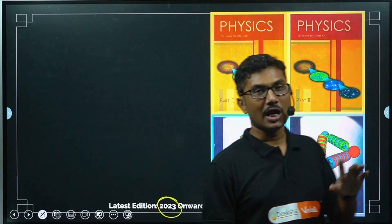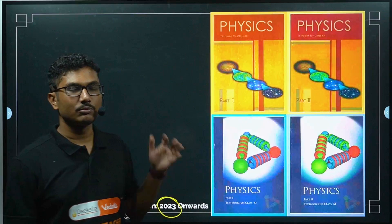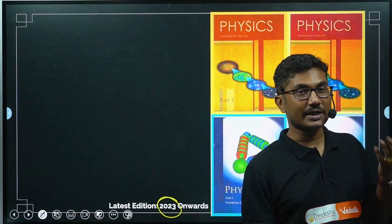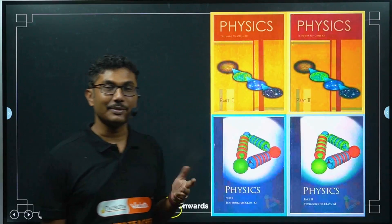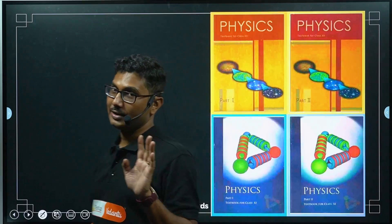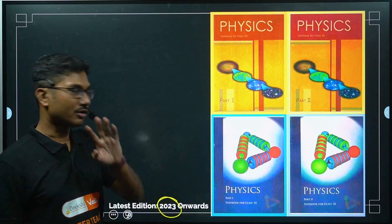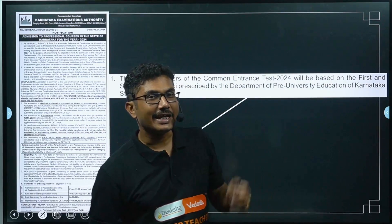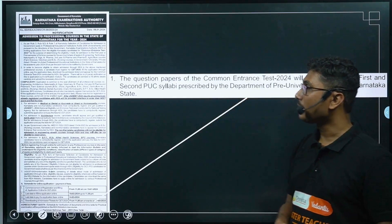If you are buying the 2022 version, there are two versions available — a reprinted version and a revised version. If it is the revised 2022 version, that is fine; otherwise it is not. Many bookstore owners have the old version and try to sell it to students who don't know that the syllabus has changed significantly since 2022. So always check for the 2023 version or later.